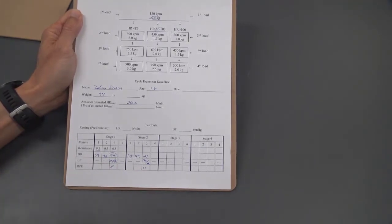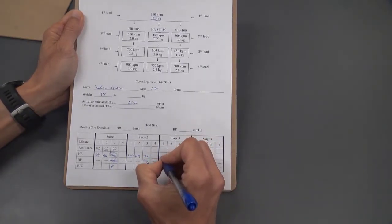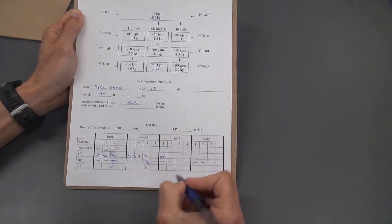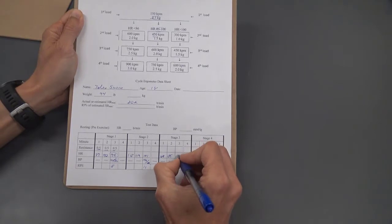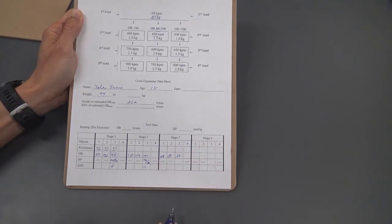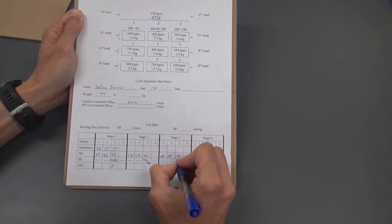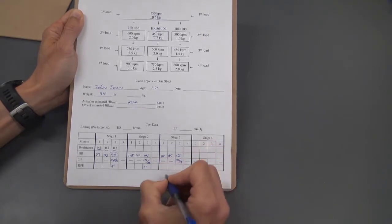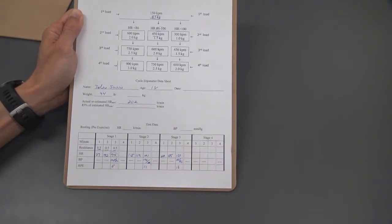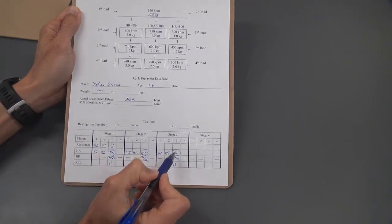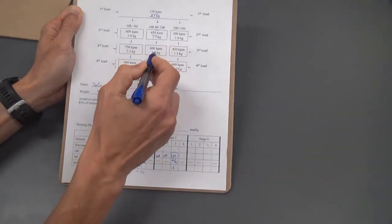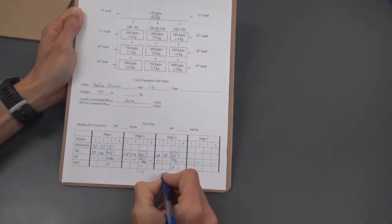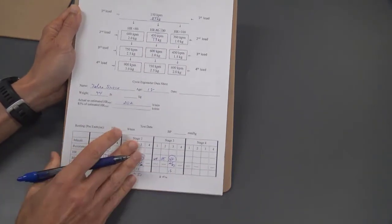We then added half a kilogram to bring up the workload to 600 kilogram meters per minute, and her heart rate in minute one of stage three was 128 beats per minute. Minute two was 135 beats per minute, and then the third minute was 137 beats per minute. Again, this was steady state, so there's no need to extend the stage by a minute. Blood pressure in this last stage was 140 over 83, and her RPE was 13. We now have steady state heart rates from two consecutive stages, and we'll need to know that stage two corresponds to a workload of 450 kilogram meters per minute, and stage three corresponds to a workload of 600 kilogram meters per minute.